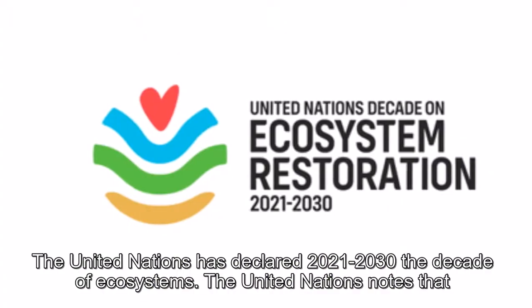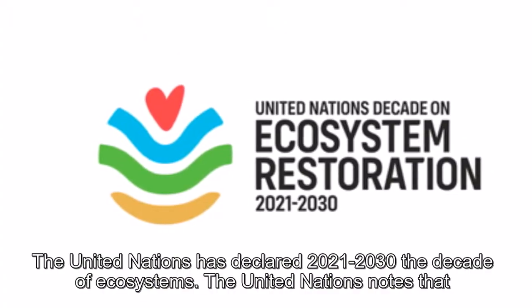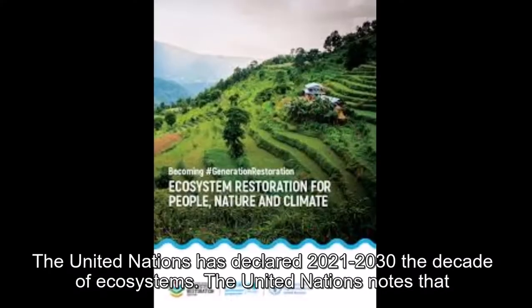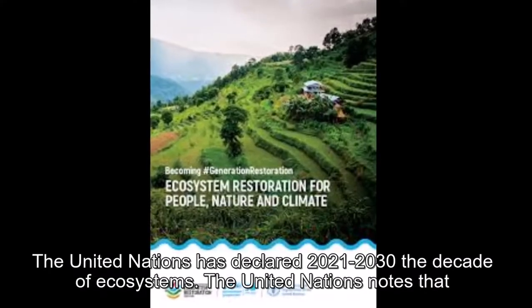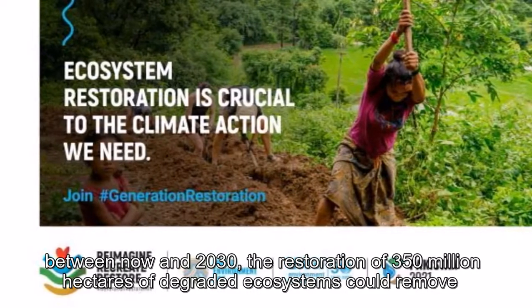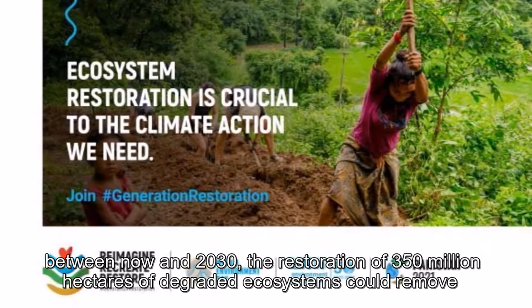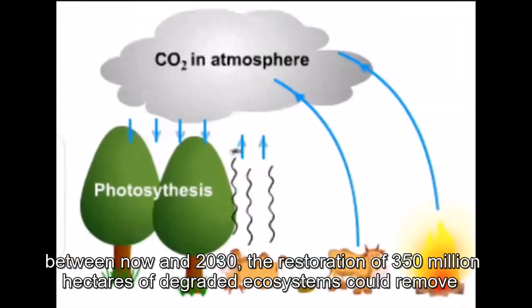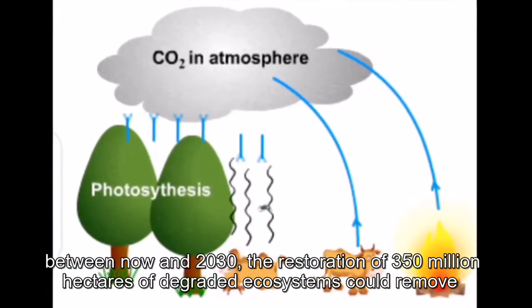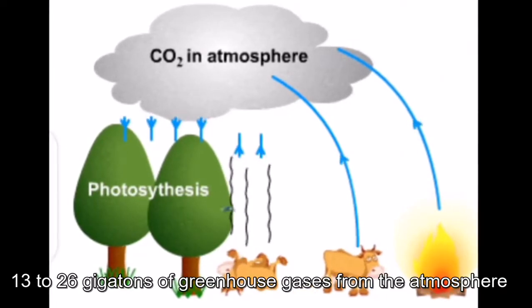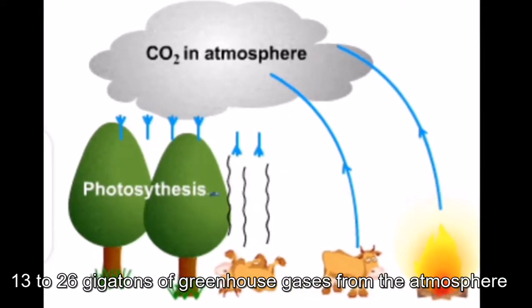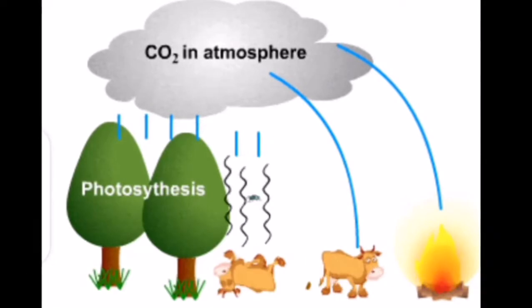The United Nations has declared 2021–2030 the Decade of Ecosystems. The United Nations notes that between now and 2030, the restoration of 350 million hectares of degraded ecosystems could remove 15 to 26 gigatons of greenhouse gases from the atmosphere.